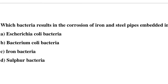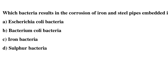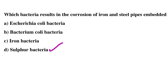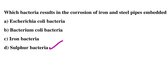Next question: which bacteria result in the corrosion of iron and steel pipes embedded in the soil? Option A: E. coli bacteria, option B: Bacterium coli bacteria, option C: iron bacteria, option D: sulfur bacteria. The correct answer is option D: sulfur bacteria. We will see the next video — thank you.